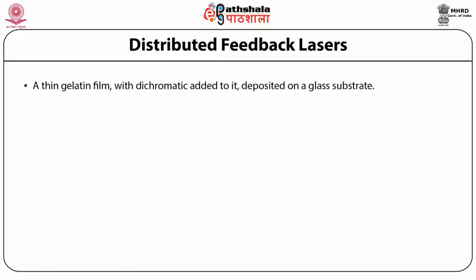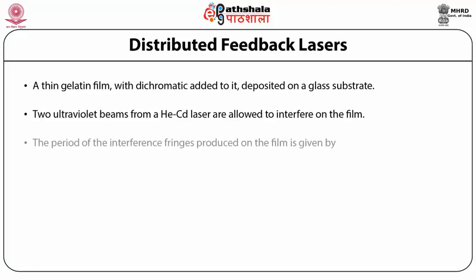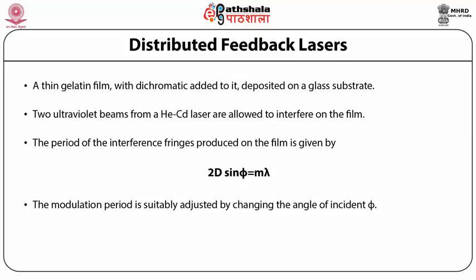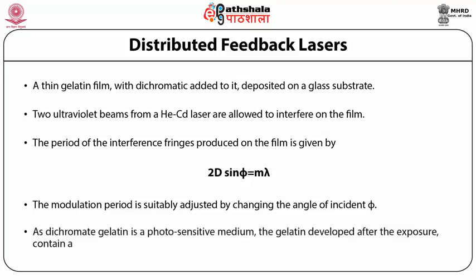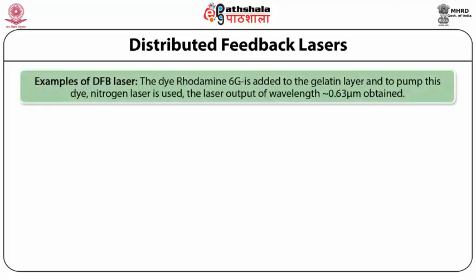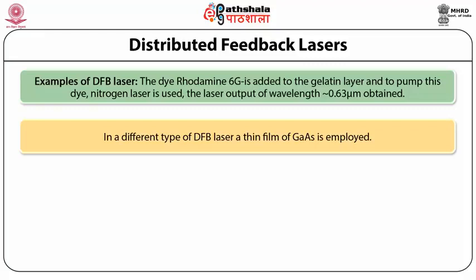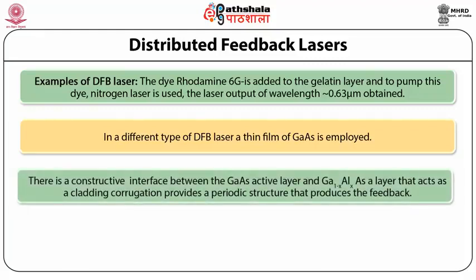A thin dichromated gelatin film deposited on a glass substrate has two ultraviolet beams from a helium-cadmium laser allowed to interfere on it. The period of the interference fringes produced is given by 2d sin φ = mλ, and the modulation period is adjusted by changing the angle of incidence φ. After exposure, the developed gelatin contains a periodic structure. The dye Rhodamine 6G is added to the gelatin layer, pumped by a nitrogen laser at 337 nm, yielding a laser output at 0.63 μm. In another type of DFB laser, a thin film of gallium arsenide is employed, with a corrugated interface between the GaAs active layer and GaAlAs cladding layer providing the periodic feedback structure.